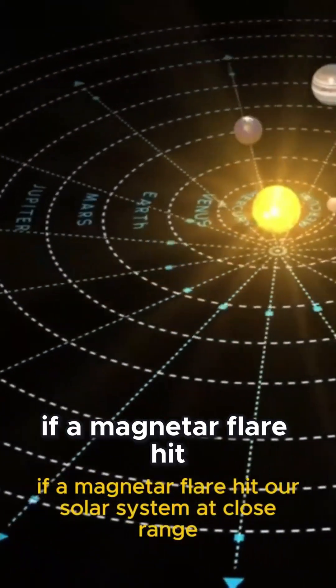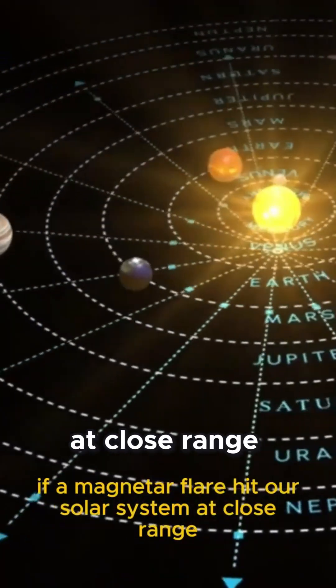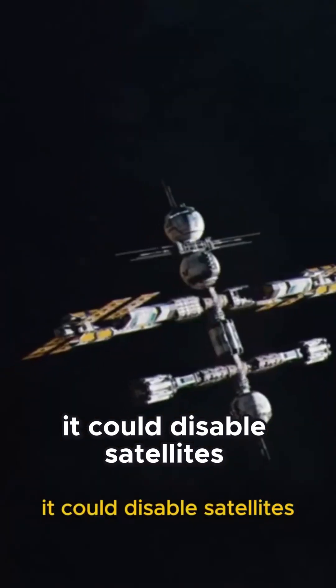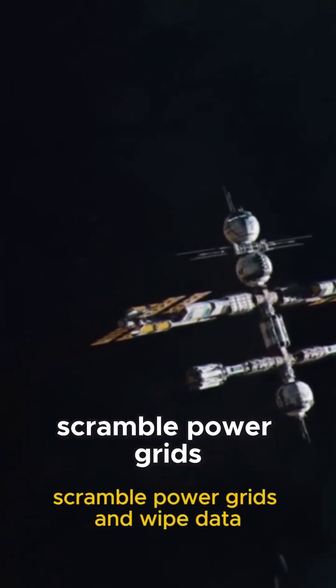If a magnetar flare hit our solar system at close range, it could disable satellites, scramble power grids, and wipe data.